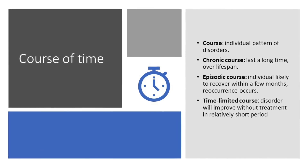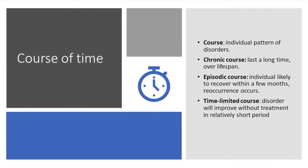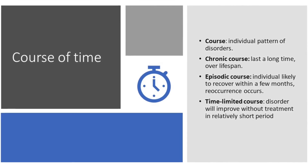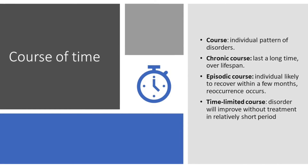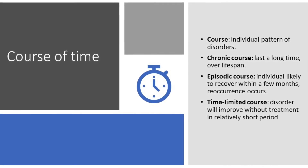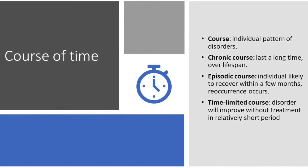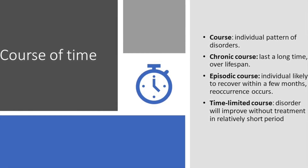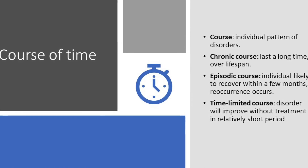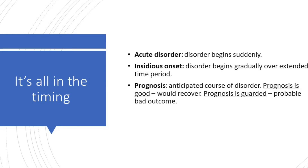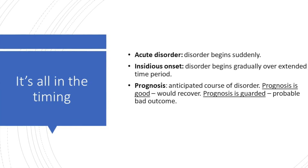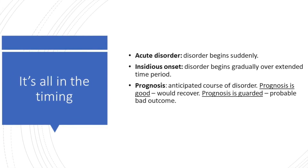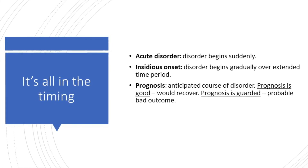Chronic courses are disorders that last over a long time or even an entire lifespan. Episodic courses are when individuals are likely to recover within a few months, followed by reoccurrence of the disorder. Time-limited courses are when a disorder will improve without treatment in a relatively short period of time. Acute disorders are disorders that begin suddenly. Insidious onset is when a disorder begins gradually over extended time periods.